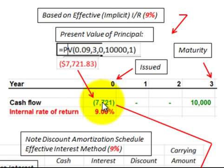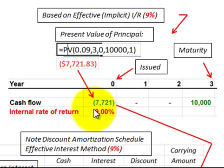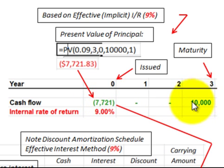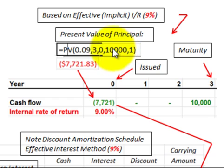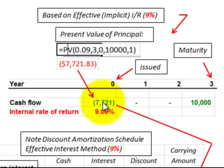We know the present value is $7,721 and the maturity value at the end of three years is $10,000. Putting this into a calculator using an internal rate of return function, we determine the interest rate to be 9%. You can check this using the present value function: $10,000 discounted back three years at 9% at the beginning of the period equates to $7,721.